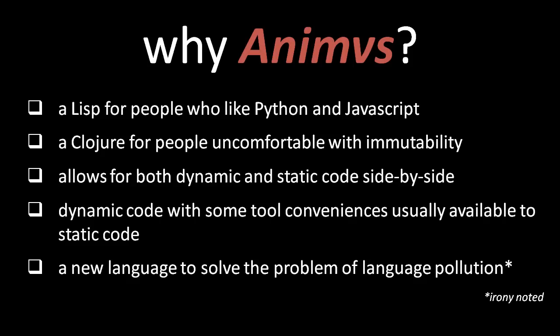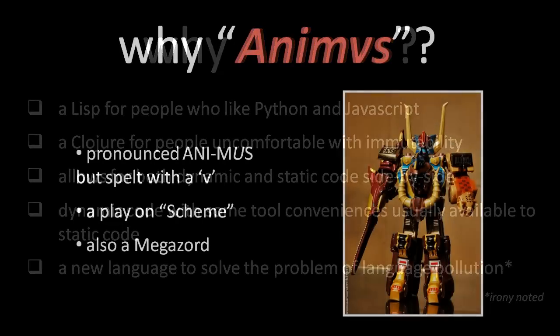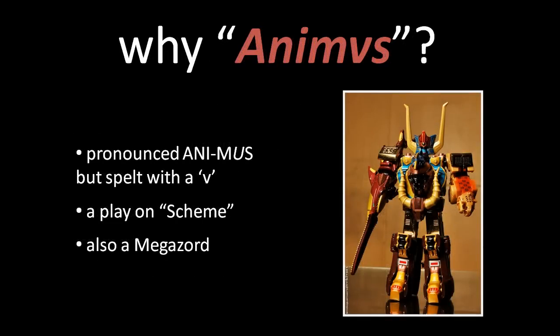This is one of the more speculative goals of the language and at this point I'm not going to say much about it. You're probably wondering why I call it Animus. Well, first off, it's spelt Animus with a V but the V is pronounced U, so just pretend it's Latin. This funny spelling was deliberate so that it will come up uniquely in Google searches. The choice of the word Animus is mainly a play on Scheme, because Animus is a Latin word with connotations including liveliness, spiritedness, animatedness, but also intelligence, intention, and planning. And aside from all that, apparently there's a Megazord named Animus.